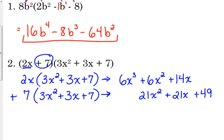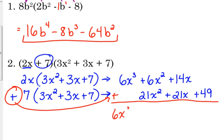7 times 3x is 21x, and 7 times 7 is 49. And now all we have to do is add these two lines. Okay? So we've got 6x cubed. 6 plus 21 is 27x squared. 14 plus 21 is 35x.